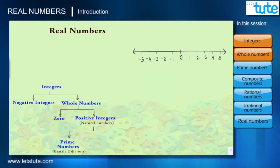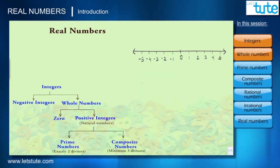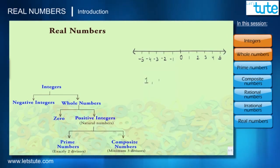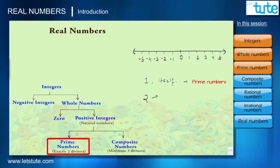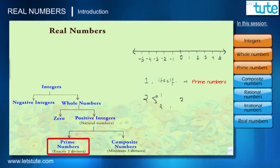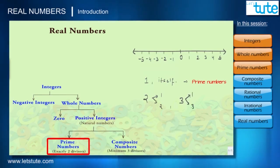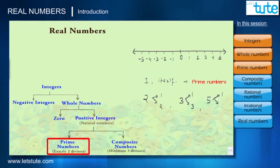We can also say that negative integers and whole numbers together are called integers. Now, positive integers are further classified into prime numbers and composite numbers. Positive integers which have exactly two divisors — that is, the number 1 and the number itself — are called prime numbers. For example, 2, 3, and 5 each have exactly two divisors, so they are all prime numbers.